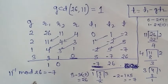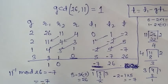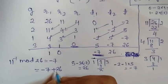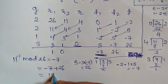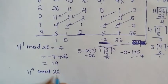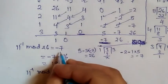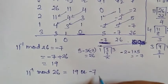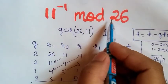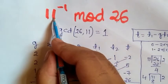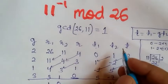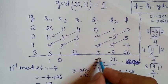Since we need a positive value, we compute minus 7 plus 26, which is 19. So the final value is 11 inverse mod 26 equals 19, or equivalently minus 7. Remember: GCD of the two numbers must be 1 to calculate the inverse. The final answer is always read from T1.